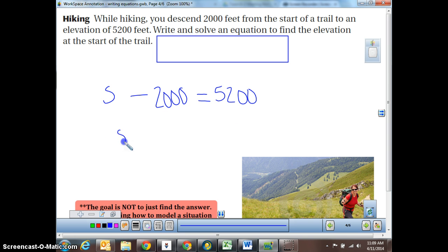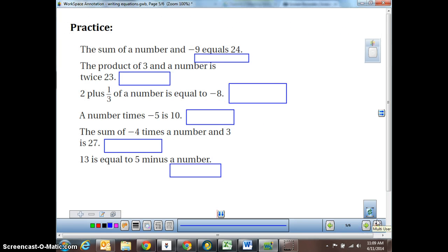So what number minus 2,000 is going to equal 5,200? I hope that you were all able to figure out that we must have started at 7,200 in order to get down to 5,200 after climbing 2,000.